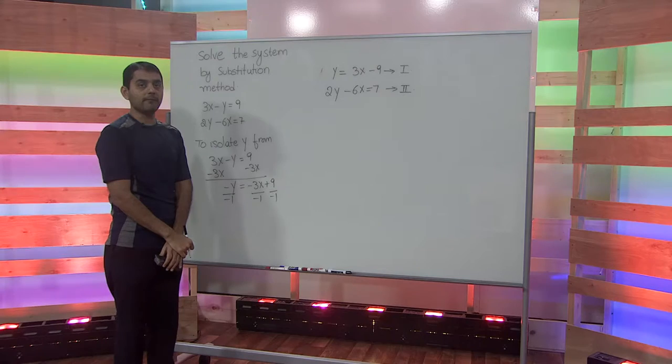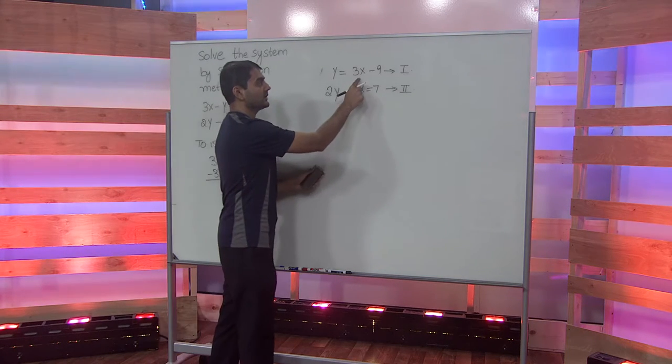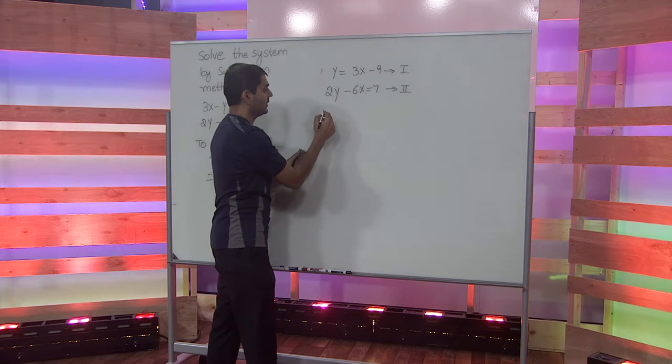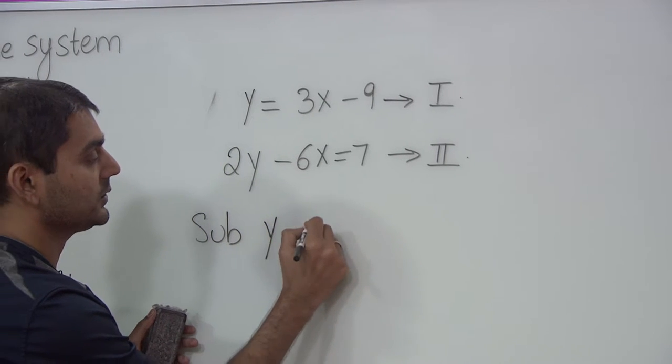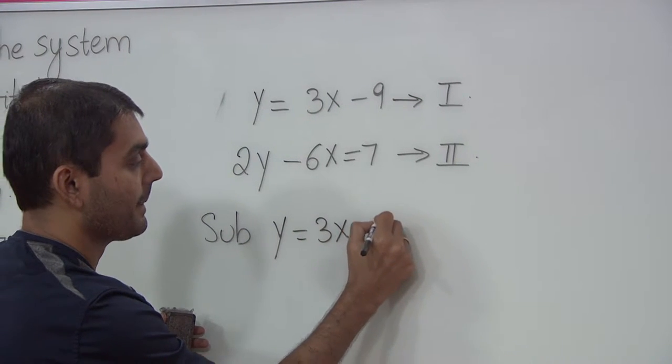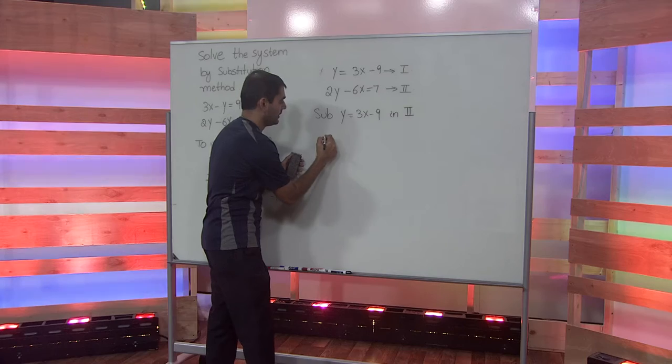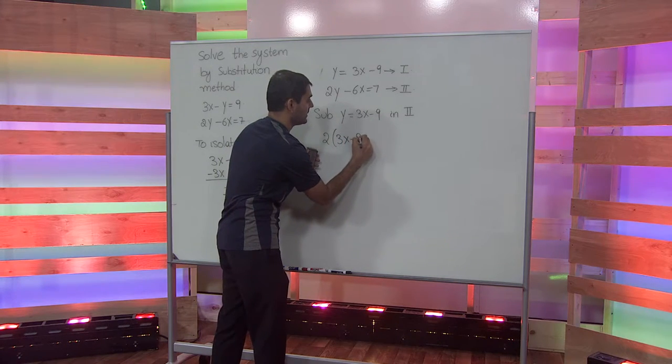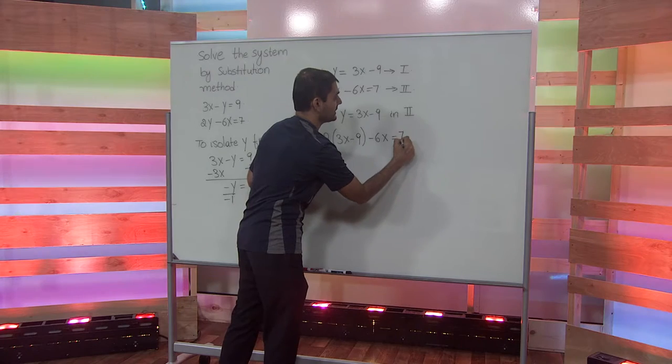To find the values of the variable, let's substitute y equals 3x minus 9 in equation 2. Substituting y equals 3x minus 9 in equation 2, we get 2 times 3x minus 9 minus 6x equals 7.